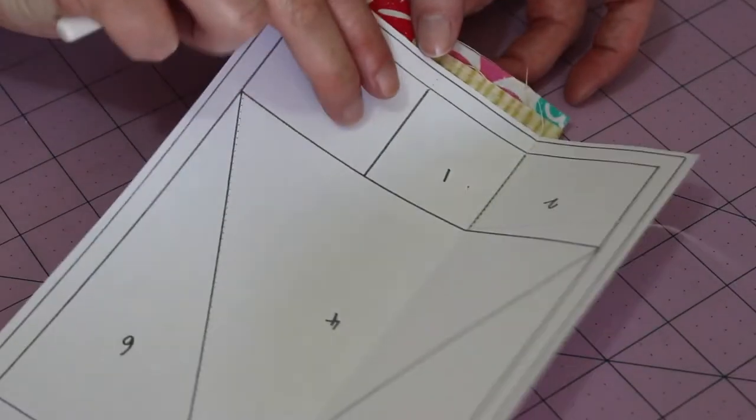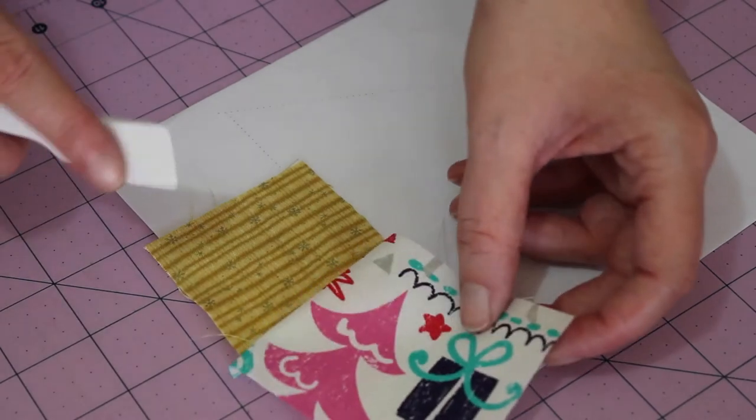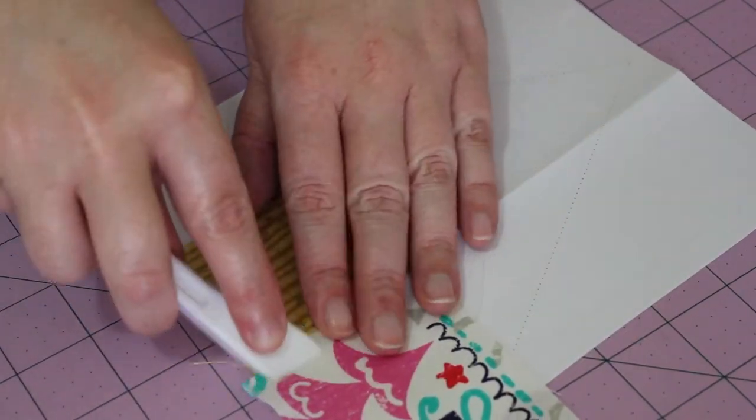Turn the pattern over and with a finger presser or iron, firmly press section two's seam open.